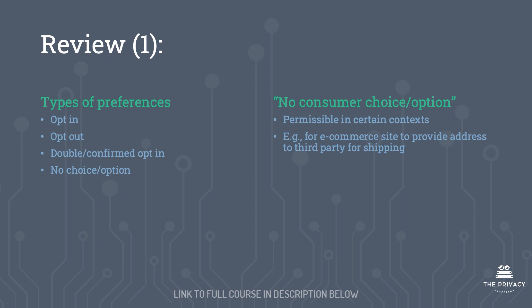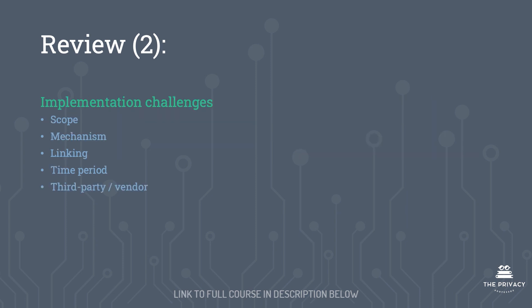In part one of this lecture we've discussed types of user preferences — opt-in, opt-out, double confirmed opt-in, and no consumer choice or no consumer option. We discussed the permissibility of no consumer choice in certain contexts, using the example of purchasing a product from an e-commerce website and supplying the customer address to a third party for shipping. We ended by talking about five implementation challenges: scope, mechanism, linking, time period, and third party/vendor.